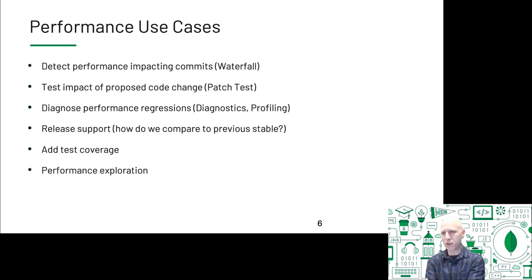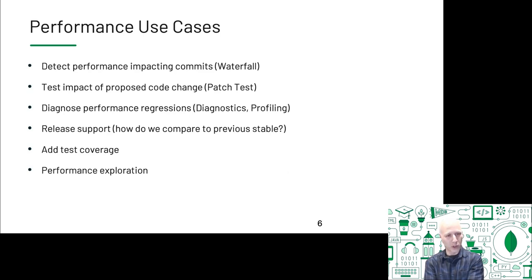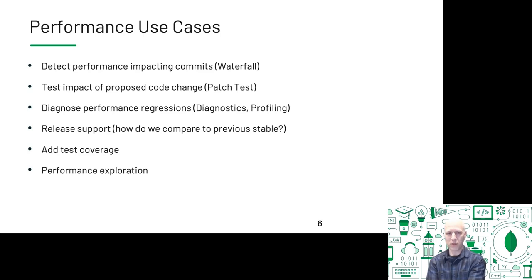We want to detect performance-impacting commits when they go into the server — we call that the waterfall. We want to test the impact of proposed code changes, because catching a regression before it ever goes into the code base is even better than detecting it soon after. We need to diagnose performance regressions through diagnostics and profiling. For release support, before we put out 5.0, how does 5.0 compare to 4.4? Where are we faster, where are we slower? Are there any blockers? We're also always trying to increase test coverage — both workloads and configurations. When you add a new feature, we want you to add performance tests for it.